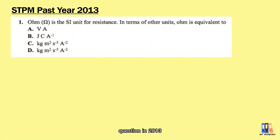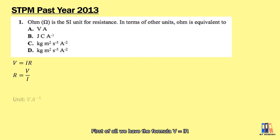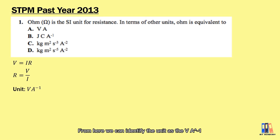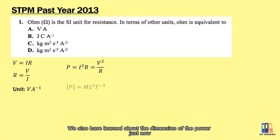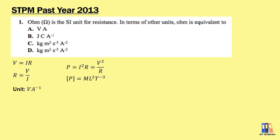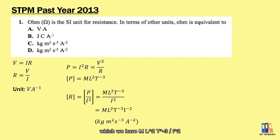Next, a past question from 2013: ohm is the SI unit for resistance — find the equivalent units. From V = IR, resistance = V/I, giving units of volt per ampere, so answer A is wrong. Using power formulas P = I²R or P = V²/R, and knowing power has dimension ML²/T³, we get resistance dimension ML²/(T³·I²), giving units of kilogram meter squared per second cubed per ampere squared — answer C.